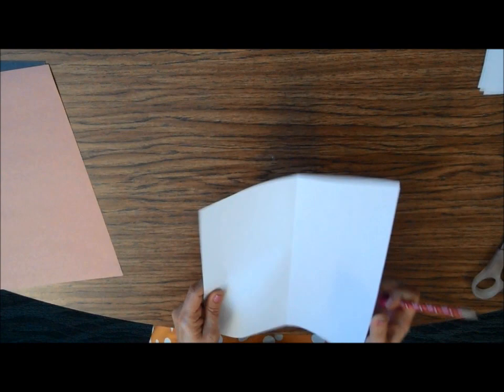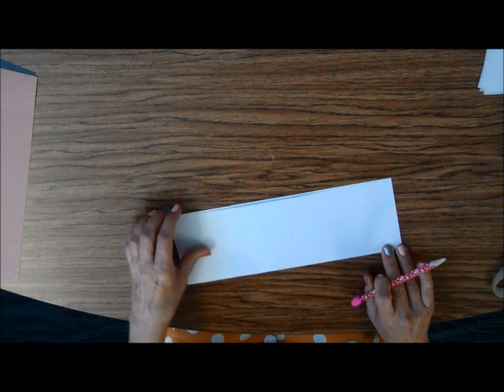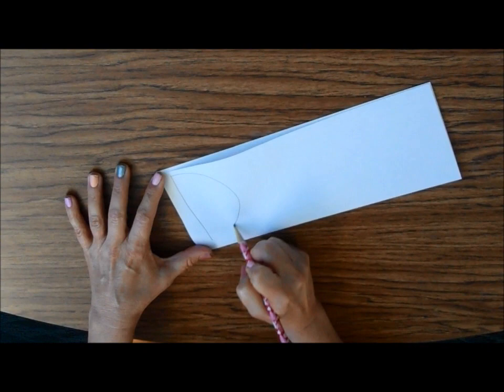So we're going to start off with your white paper, fold it in half the long way. I forgot to say pencil. And then you're going to write your name on your paper. It can be printed or in cursive. So I'm going to go ahead and write my first name.